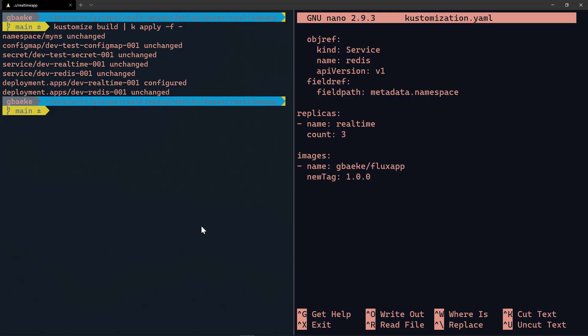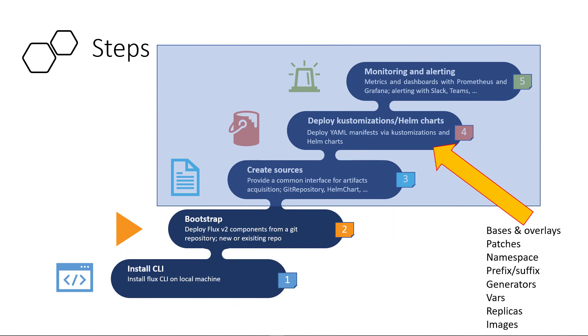We've used kustomize build and applied its output to our cluster, which is exactly what Flux v2 will do — take base YAML files, apply customizations, and deploy to the cluster. We've come to the end of this overview of Kustomize. With these basics laid out, we're ready for the next video to understand how we deploy customizations using Flux v2, including bases and overlays, patches, namespaces, and image modifications. Hope to see you then — stay tuned, take care.